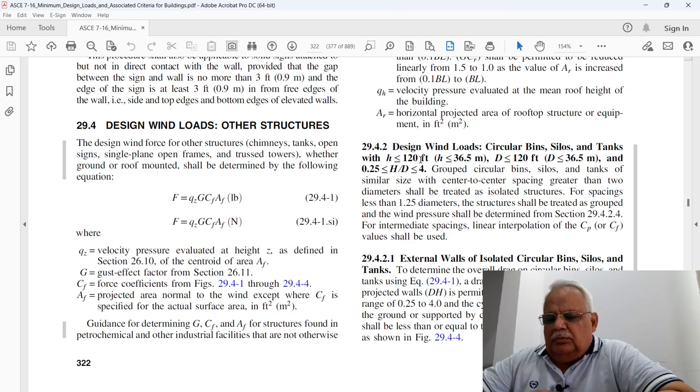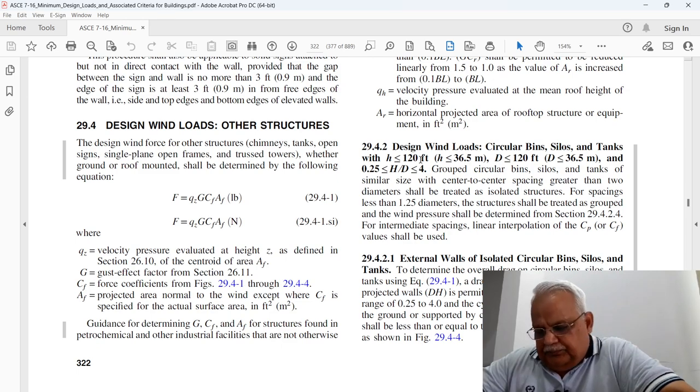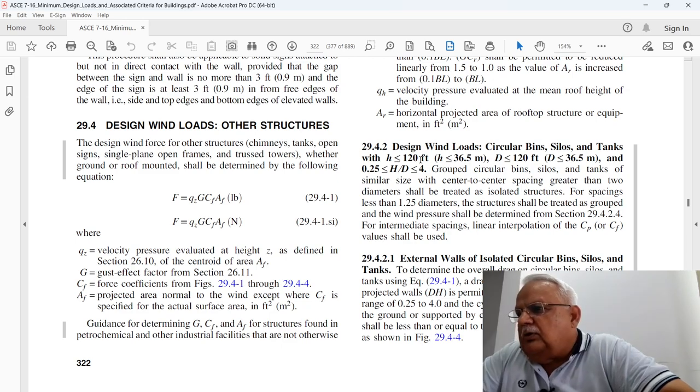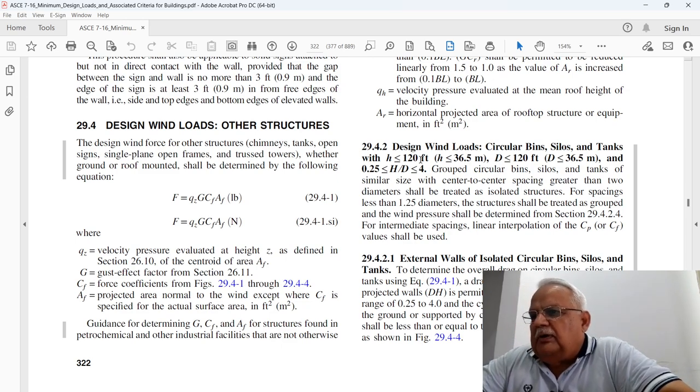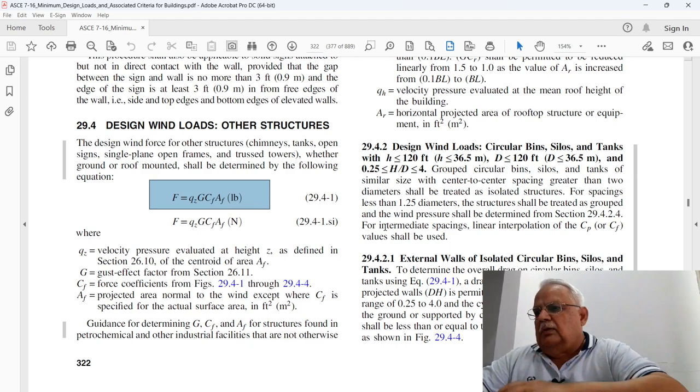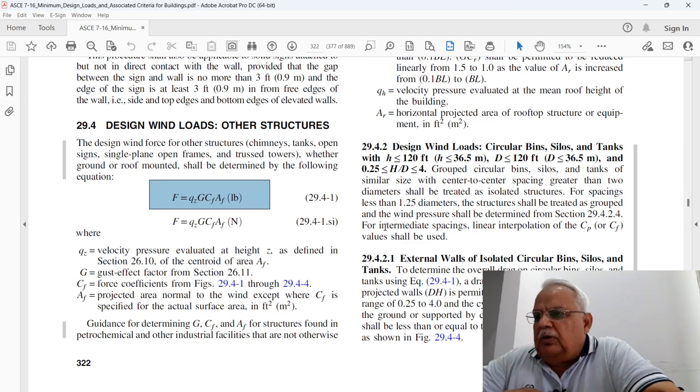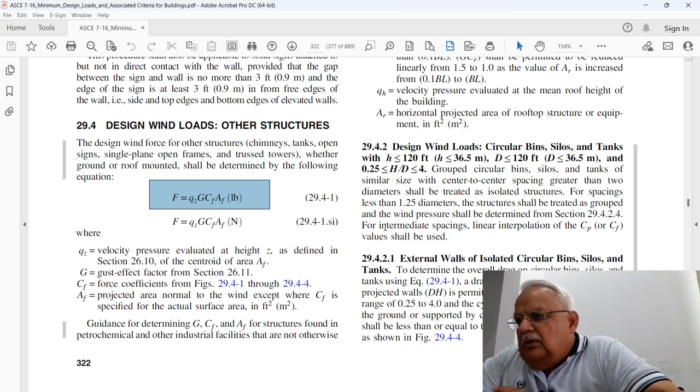So that's why I am preparing this video. As you know, the Building Code of Pakistan 2021 is based on ASCE 7-16. When you open ASCE 7-16, section 29.4 is related to freestanding billboards, where you can see that the force is defined like this: the force on the billboard is qz times G times Cf times Af.